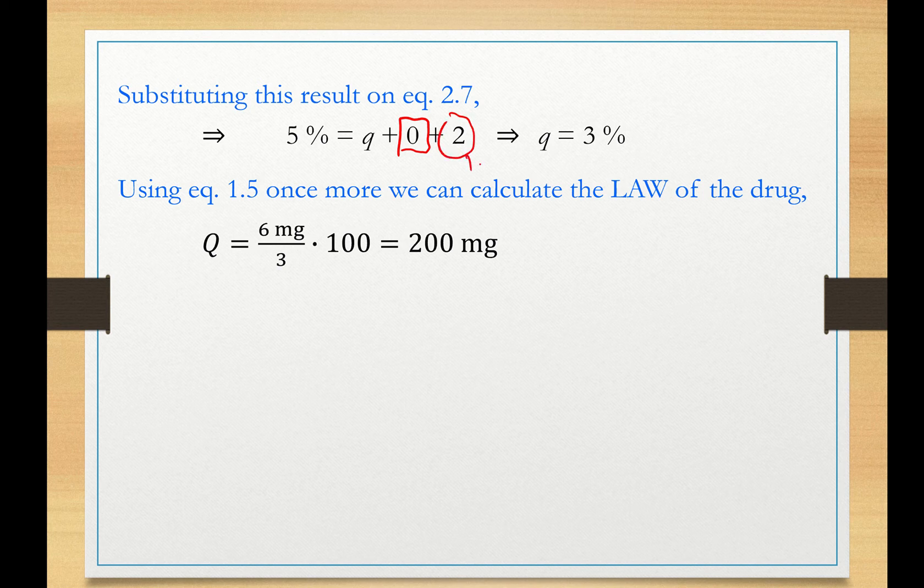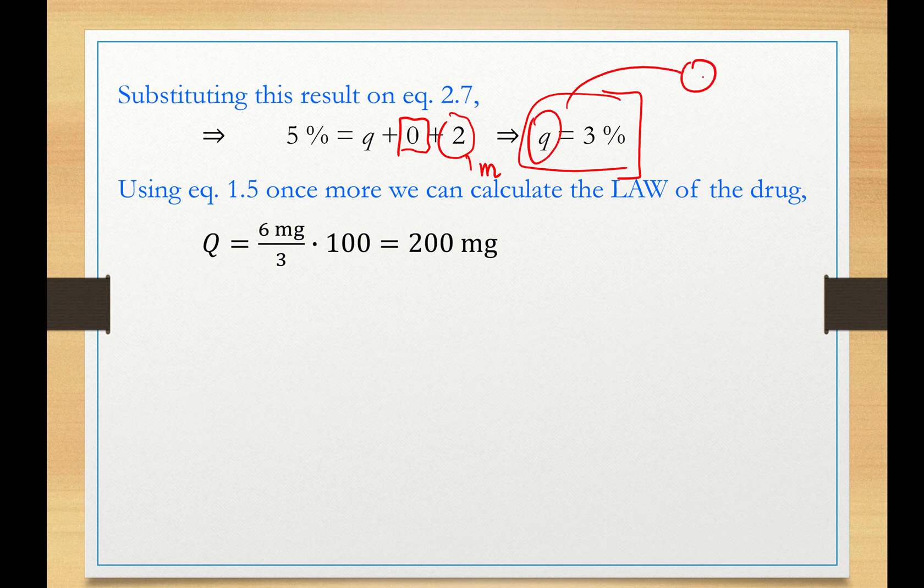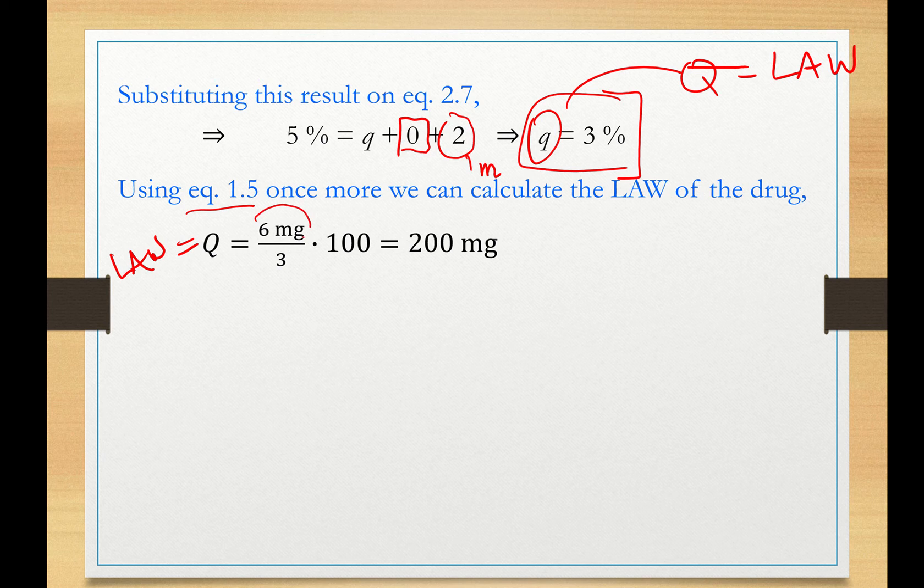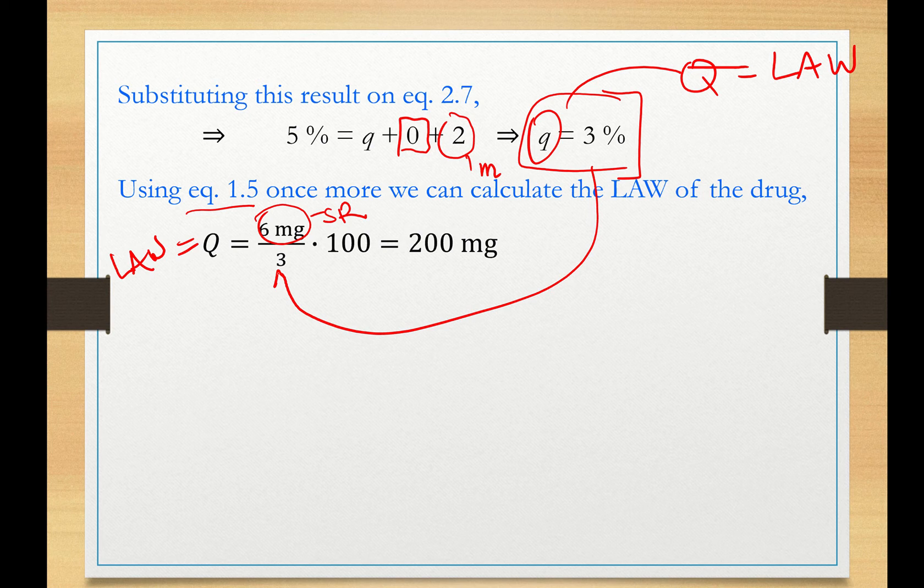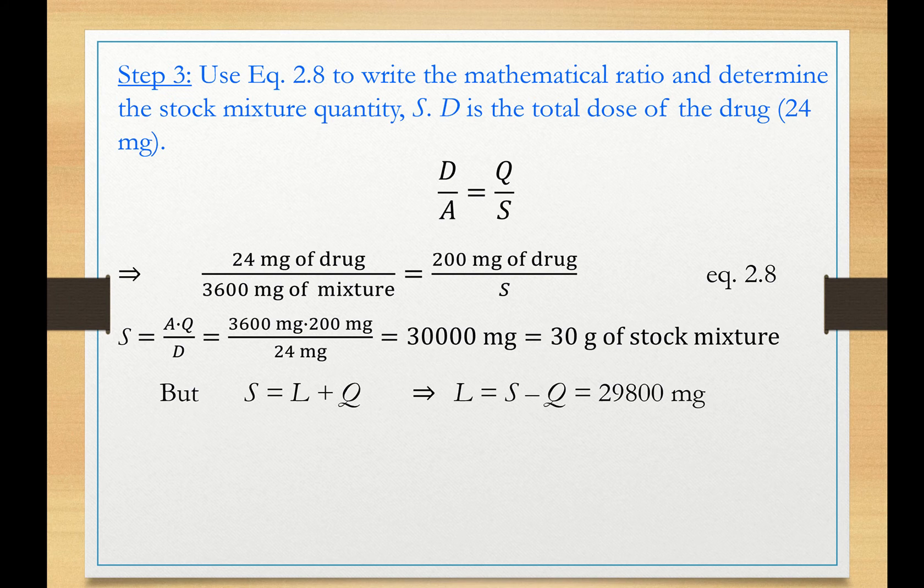And this 2% is m. And therefore, the error associated with measuring the drug quantity Q or the least allowable weight is 3%. That's the maximum allowable error. When I use equation 1.5 once more to measure the least allowable weight of my drug, 6 mg is my SR. Now, 3%, that's the error, times 100, my least allowable weight or the minimum amount of drug that I can measure without exceeding the maximum allowable error is 200 mg. So you need to do that.